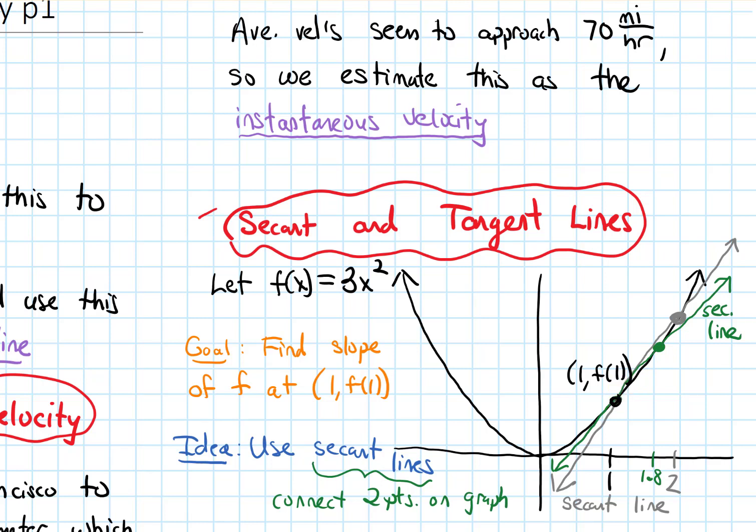eventually it'll approach a line like this that right at that point matches how steep the graph is. And it looks like that's going to be something like that. So this orange line is what we call the tangent line. That line lies tangent to that curve.